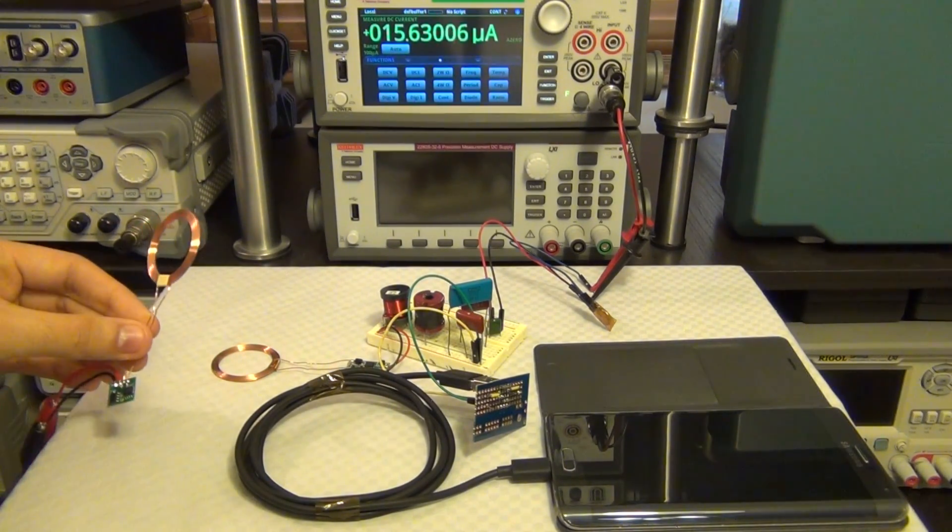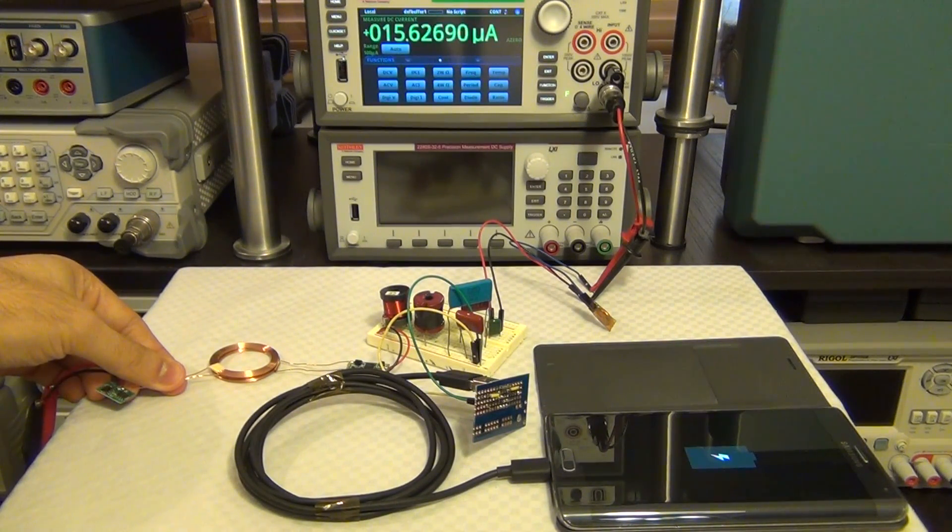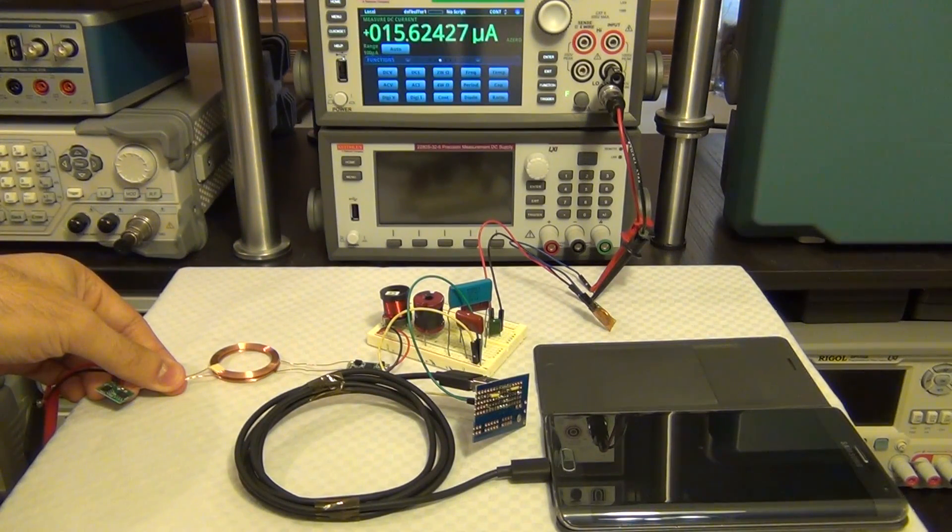And here is the other half of the charging circuitry. Of course once you bring the two coils together you're able to create some wireless transfer between the two coils and therefore begin to charge the phone. No magic, all science.